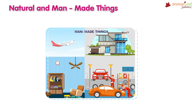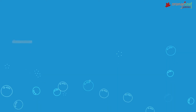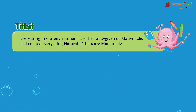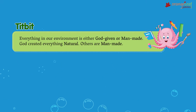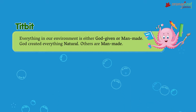Man-made objects are the objects made by humans. For example, automobiles, aeroplanes, fans, clothing, homes, furniture, etc. Everything in our environment is either God-given or man-made. God created everything natural.